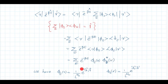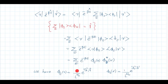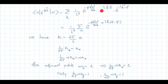Substituting the known values of φ_E(r) and φ_E*(r') and replacing E with ℏ²k²/2m, this becomes (1/L³) Σ_k e^{-βℏ²k²/2m} e^{ik·(r-r')}. This can be written as (1/L³) Σ_k e^{-βℏ²k²/2m + ik·(r-r')}.